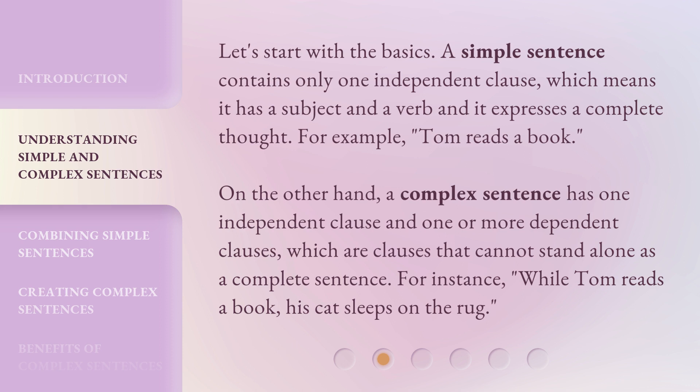Let's start with the basics. A simple sentence contains only one independent clause, which means it has a subject and a verb and it expresses a complete thought. For example: 'Tom reads a book.' On the other hand, a complex sentence has one independent clause and one or more dependent clauses, which are clauses that cannot stand alone as a complete sentence. For instance: 'While Tom reads a book, his cat sleeps on the rug.'